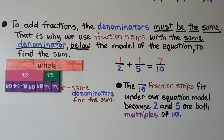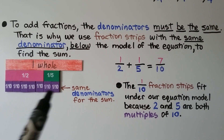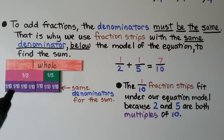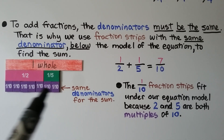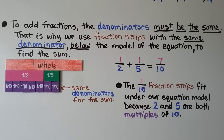To add fractions, the denominators must be the same. That is why we use fraction strips with the same denominator below the model of the equation to find the sum — so all of these have the same denominator, 10. We're adding 1 half plus 1 fifth; it's equal to 7 tenths. The 1-tenth fraction strips fit under our equation model because 2 and 5 are both factors of 10.